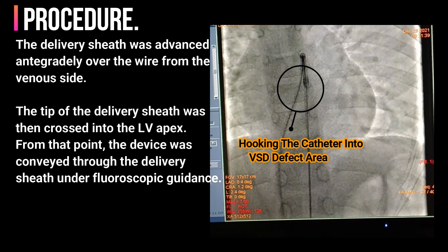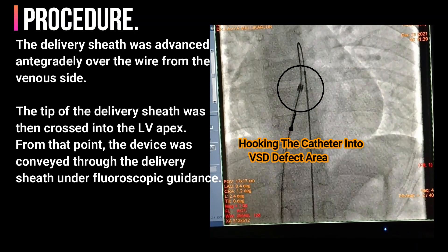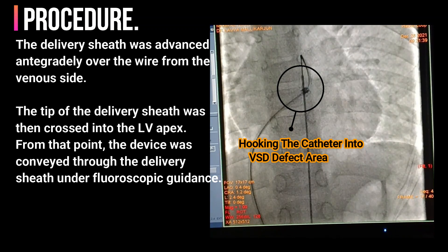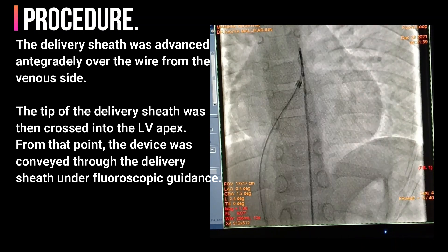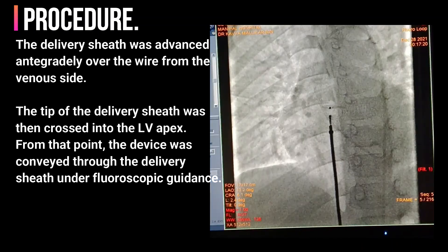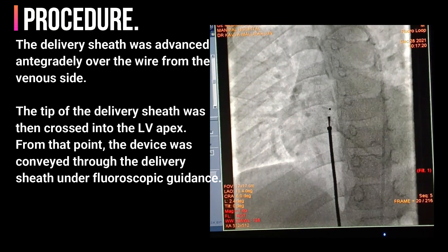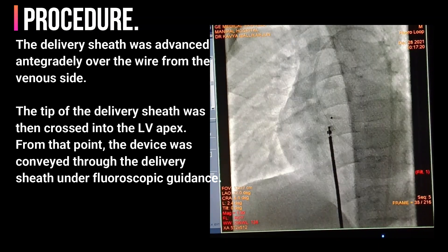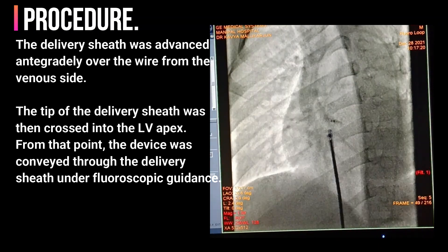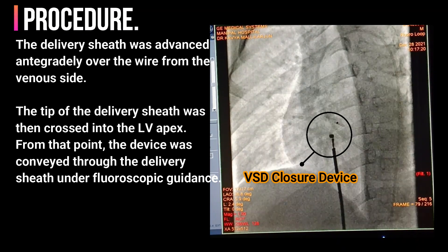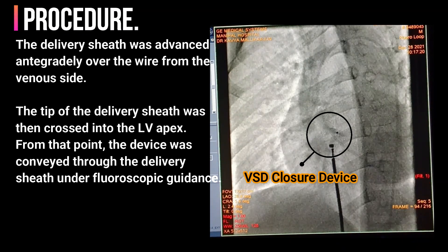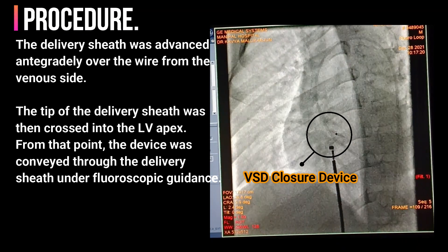The delivery sheath was advanced antegradely over the wire from the venous side. The tip of the delivery sheath was then crossed into the LV apex. From that point, the device was conveyed through the delivery sheath under fluoroscopic guidance.